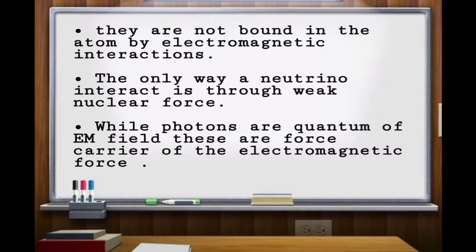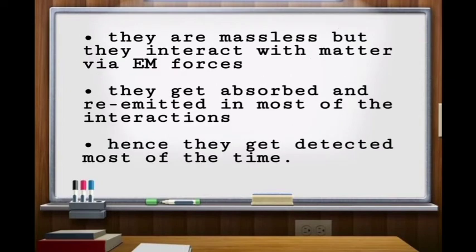The only way a neutrino interacts is through weak nuclear force. While photons are quantum of electromagnetic field, these are the force carriers. So they are massless but interact with matter via electromagnetic force.